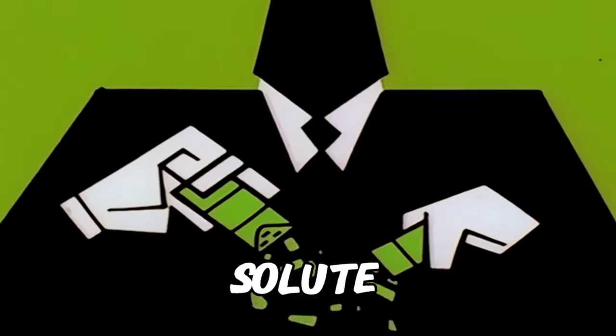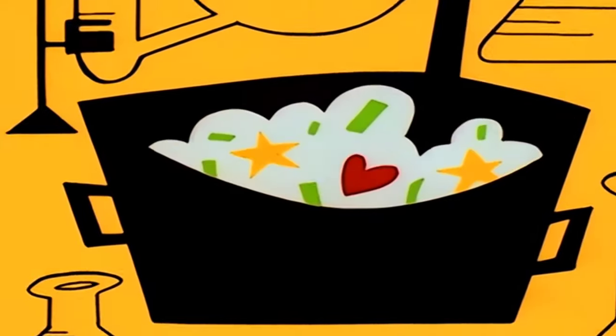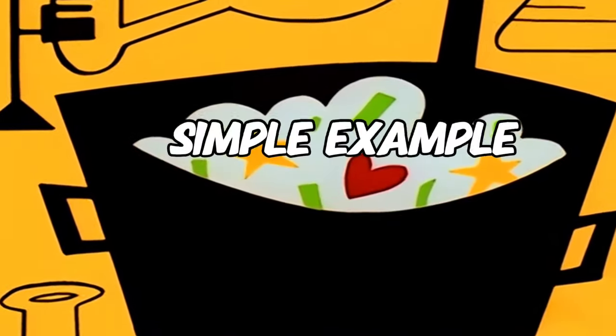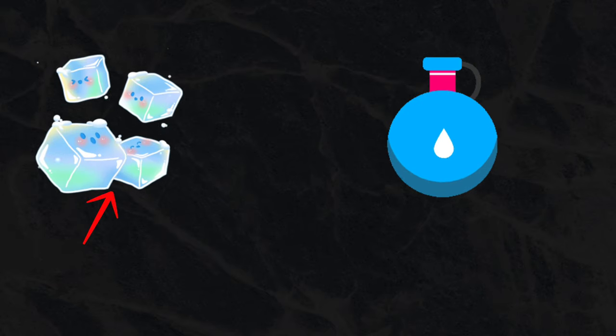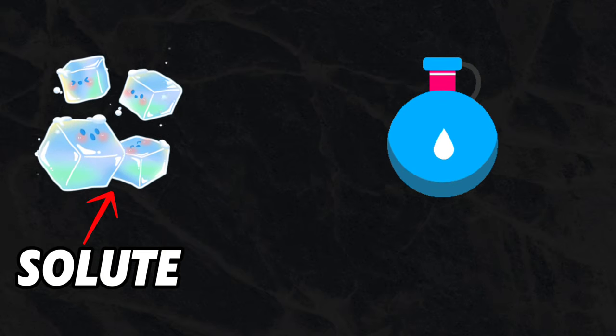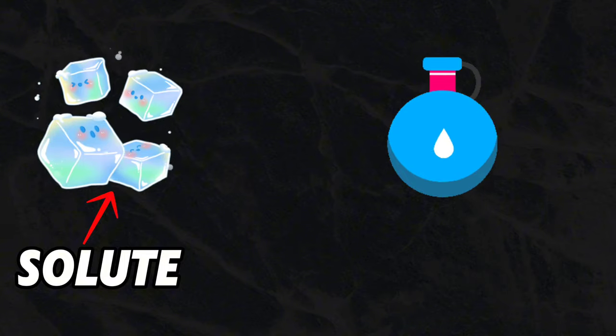The difference between the solute, the solvent, and the solution can be explained by a simple example. If you have salt and water, the salt is the solute and the water is the solvent.